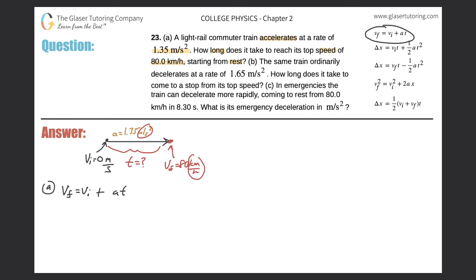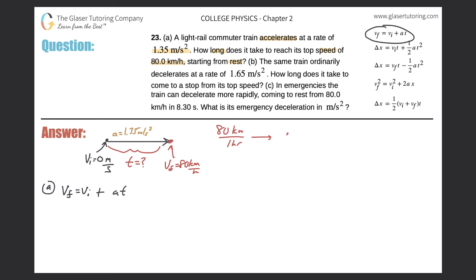The displacement units don't match — one is meters, one is kilometers — and the time units don't match either — one is seconds, one is hours. So we need to do a unit conversion. I'm going to convert 80 kilometers per hour into meters per second for consistency. Let's do that — so we start with 80 kilometers per hour.